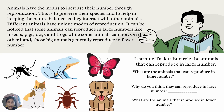Learning Task 1: Encircle the animals that can reproduce in large numbers, then answer the following questions. What are the animals that can reproduce in large numbers? Why do you think they can reproduce in large numbers? What are the animals that reproduce in fewer numbers?